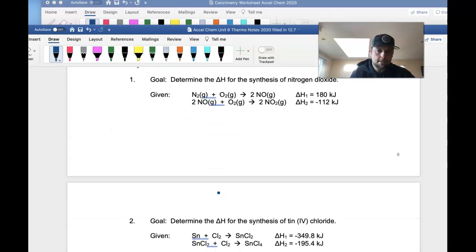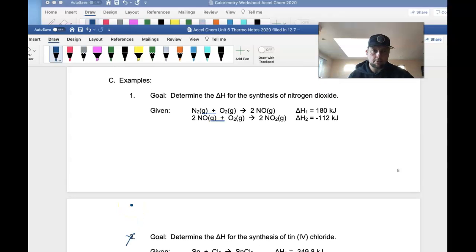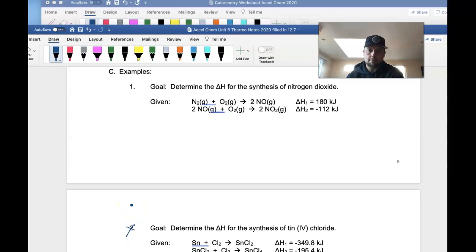We're going to go through example one and example three. If you want to do number two on your own, it's very similar to example one, and it's on the relatively simple side. So the very first thing we're going to do is write, if it's not given already, we're going to write the goal reaction that we're looking for the delta H for. So the synthesis of nitrogen dioxide is going to be N2, which is diatomic, plus O2 gives 2NO2.